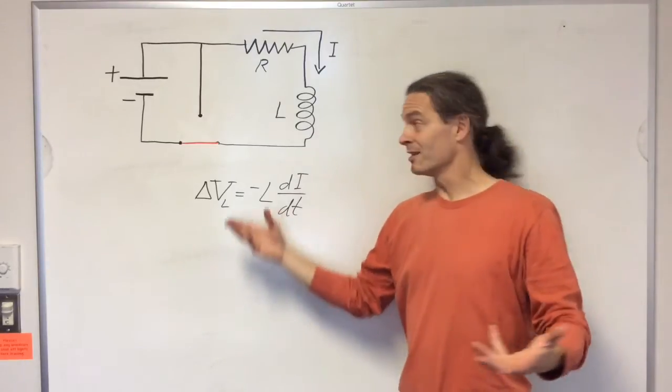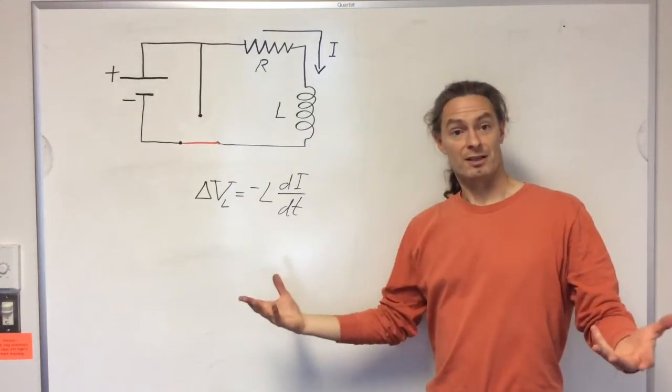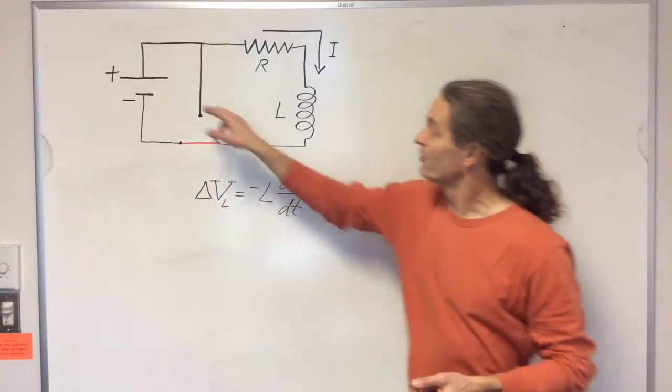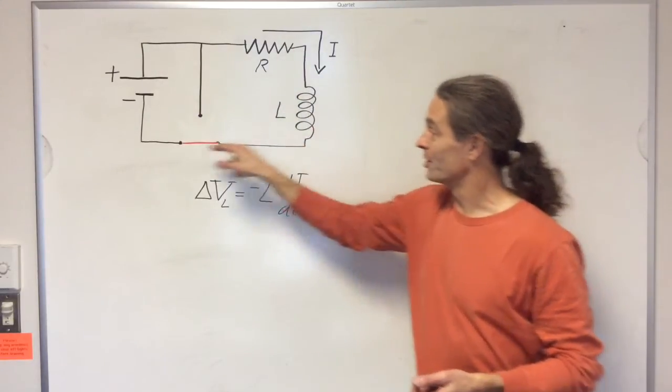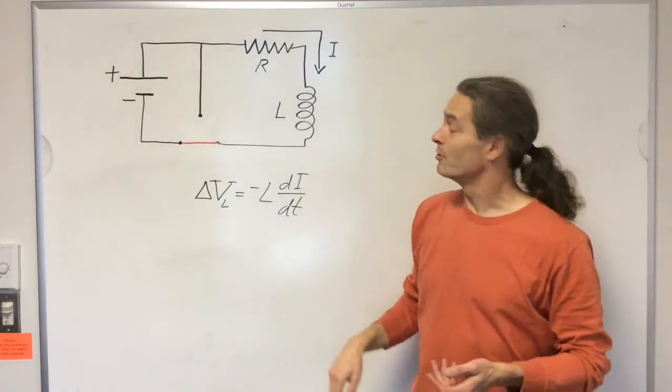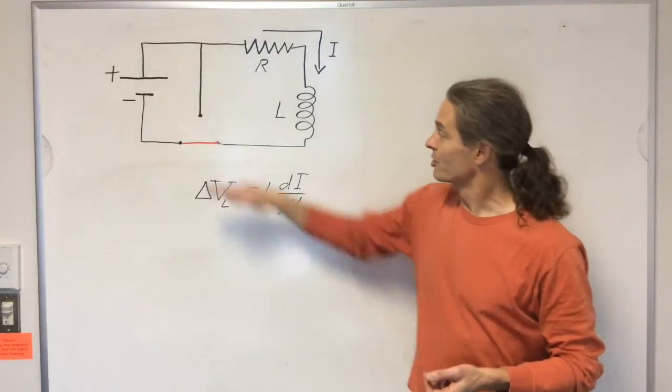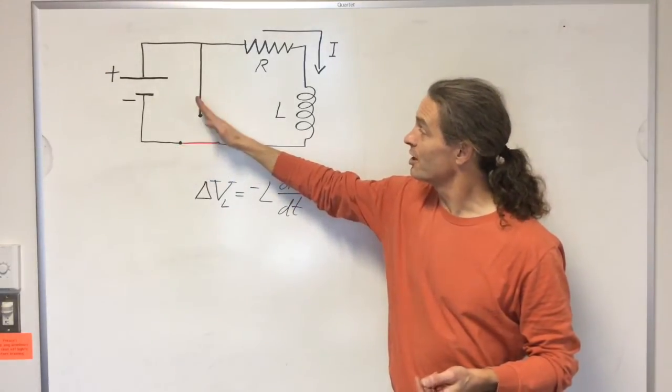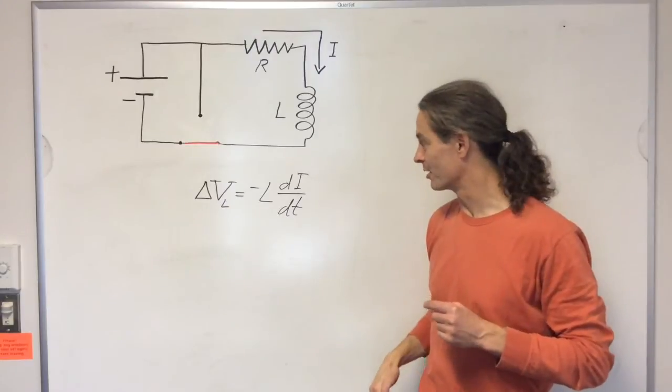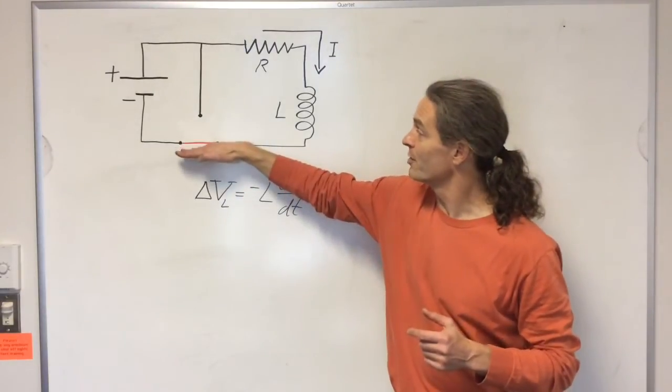So imagine we've let this situation exist for a long period of time. We've got a steady initial current built up and then what we want to do is disconnect the battery. So we're going to move the switch from here to here. We're going to call that our time zero. So here we go. We're going to move the switch from here to here.